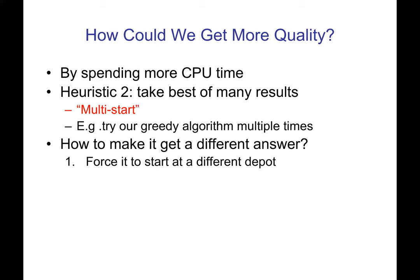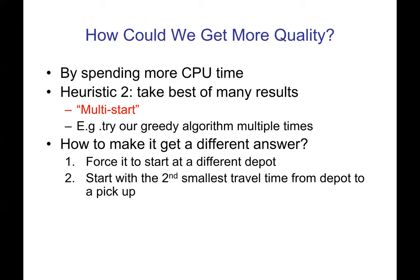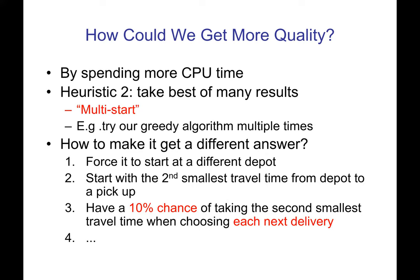So we need to make it get a different answer by changing it somehow. The greedy algorithm we came up with basically started at the depot closest to some pickup — minimizing that first travel time. We could instead try a different depot when we run the algorithm again, making all the other decisions different. For example, we could start with the second smallest travel time from a depot to a pickup. We could also have a 10% chance of taking the second smallest travel time when choosing the next delivery, rather than always going to the closest legal pickup or drop-off.